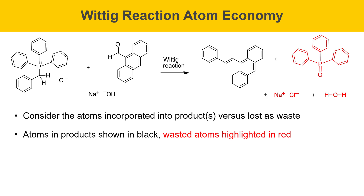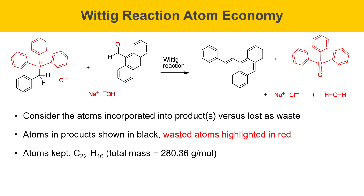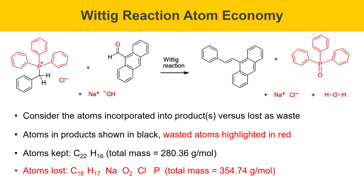The one product of interest is the alkene, and all other atoms in the other products — triphenylphosphine oxide, sodium chloride, and water — are all going to be discarded. If we add up all the atoms in the product we're keeping, we get 22 carbons and 16 hydrogens, giving a total mass of 280.36 grams per mole. If we add up the atoms lost in waste, there are 18 carbons, 17 hydrogens, a sodium atom, 2 oxygen atoms, a chlorine atom, and a phosphorus atom, totaling 354.74 grams per mole. Therefore, less than 50% of the mass of the starting materials actually turns up as atoms in the product.